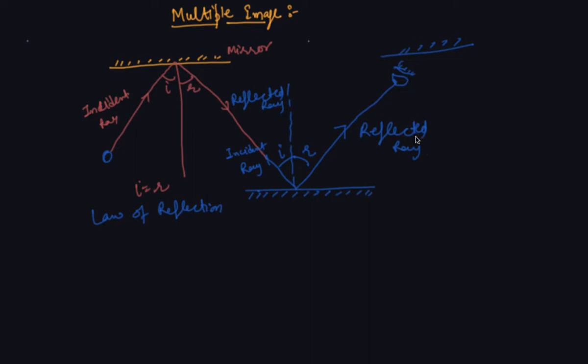This is the main reason behind what you might have seen in a barber shop. After your haircut is complete, the barber holds a mirror behind you to show how the hair has been cut on the back side. He holds a mirror behind you and there is a mirror in front of you, so there is multiple reflection.